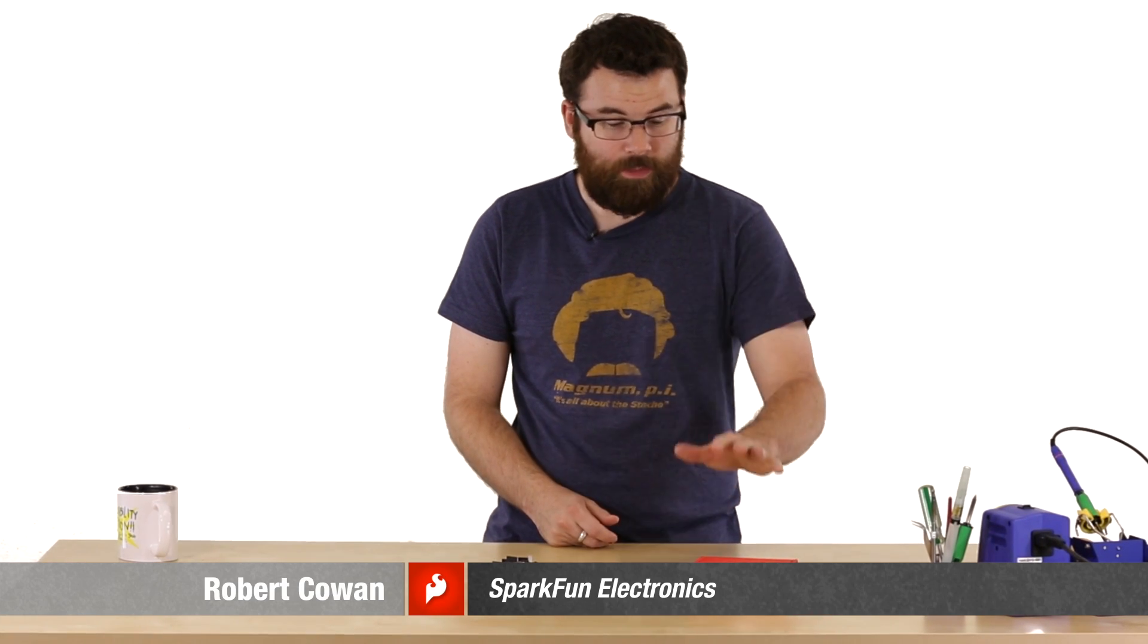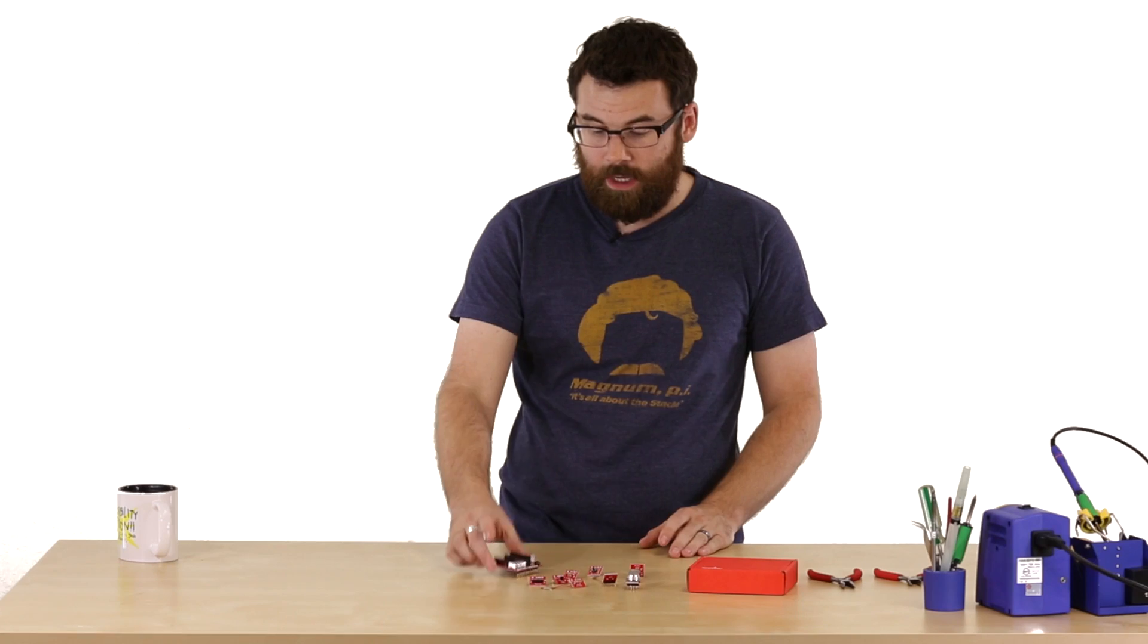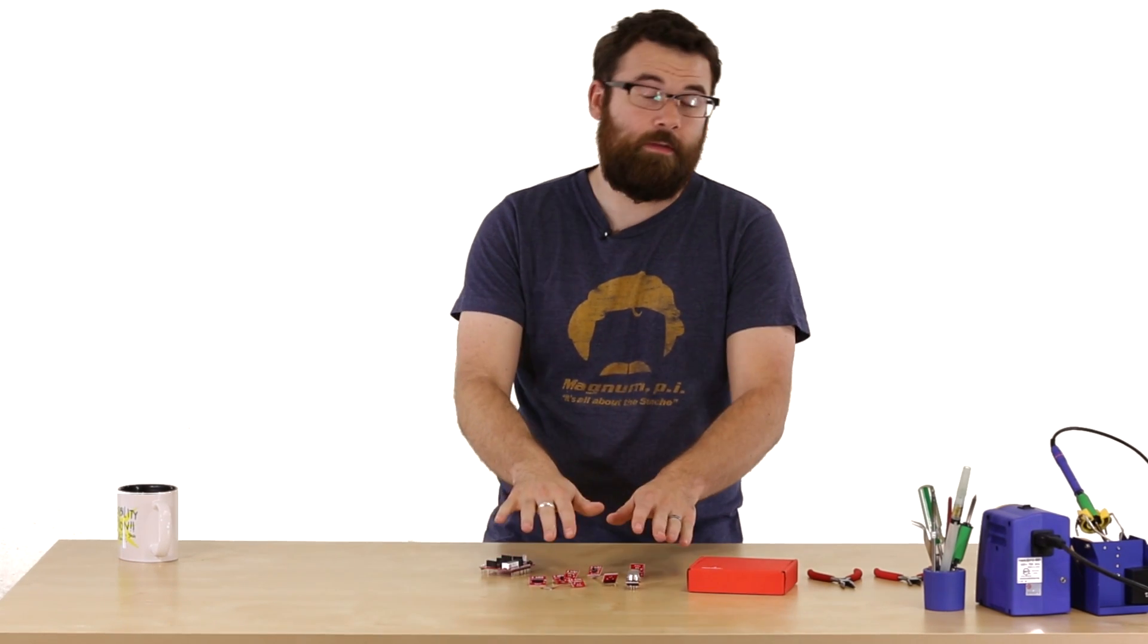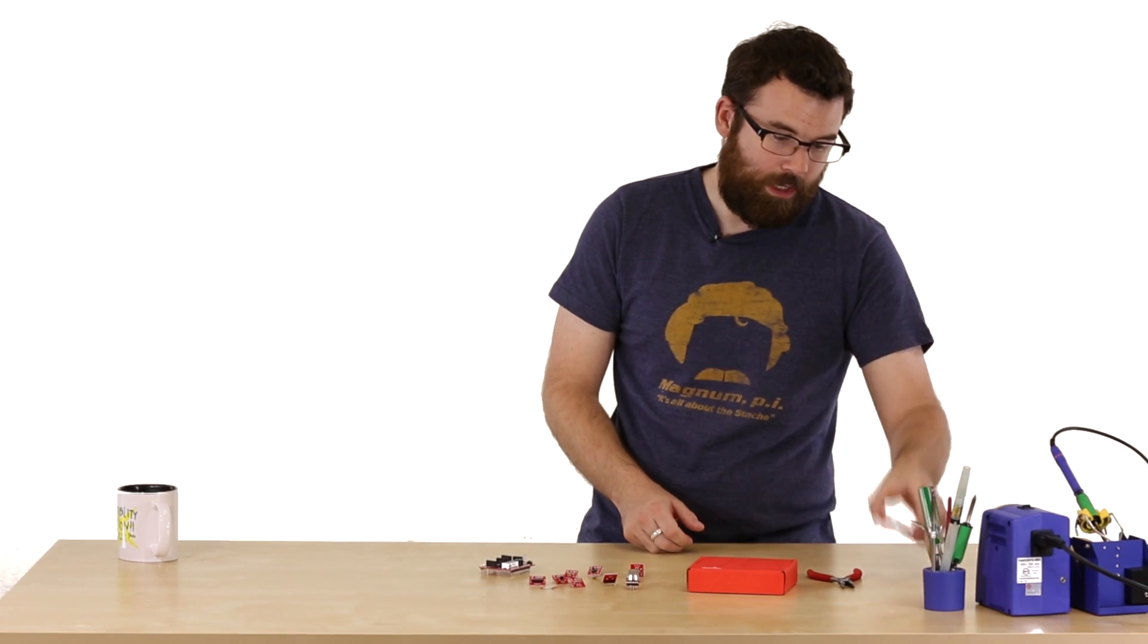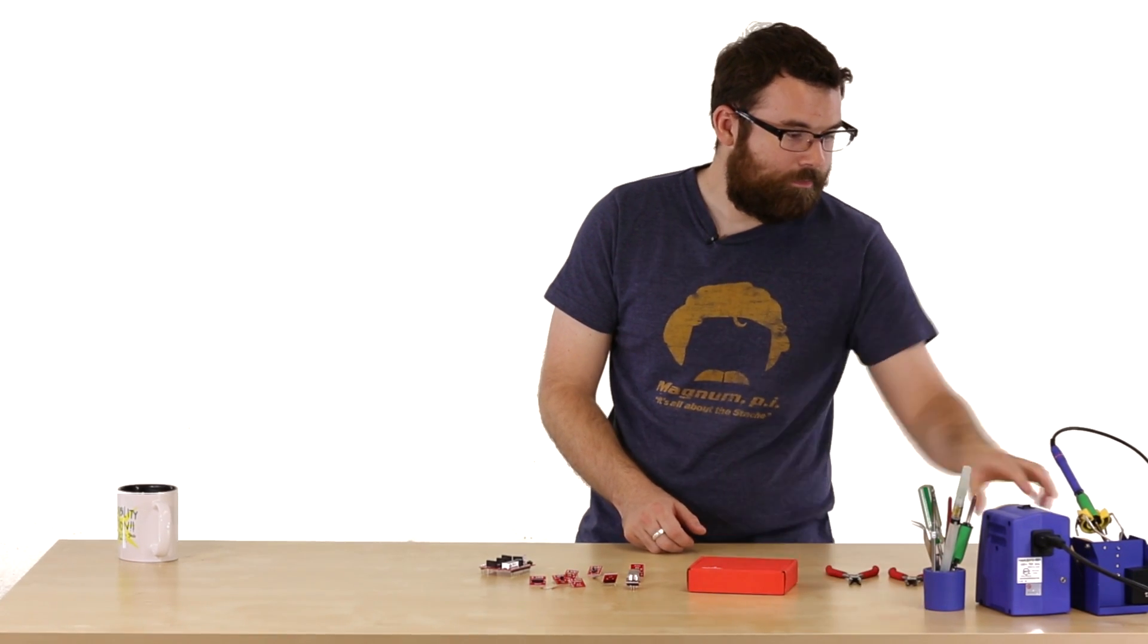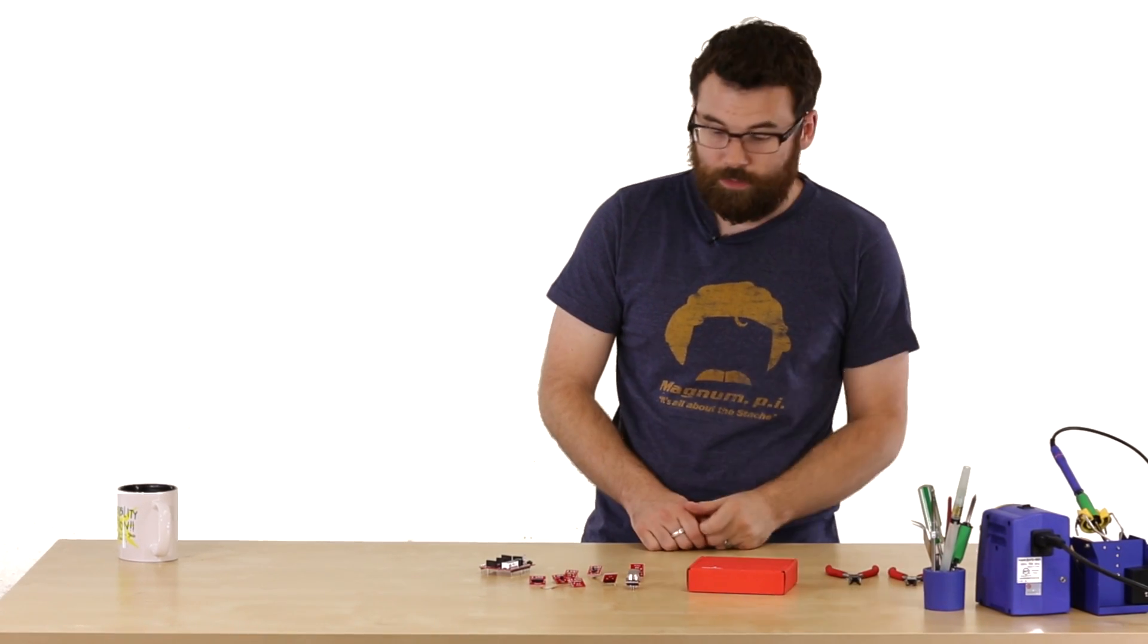This is the assembly video for the Q-Tech Learning Sensors Kit. We're going to be taking the kit, putting it together, and you'll end up with the shield and all the individual sensors. All you need is a couple tools: a soldering iron, cutters, some pliers, and some solder. So let's put it together.